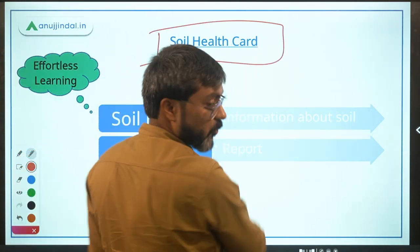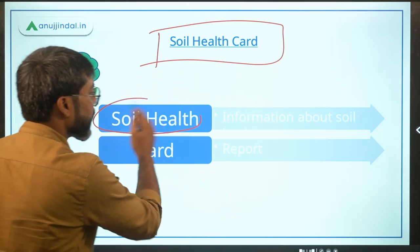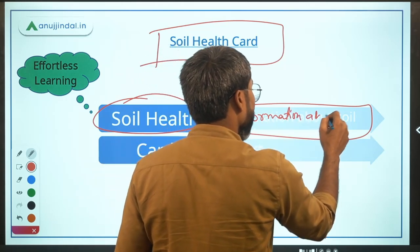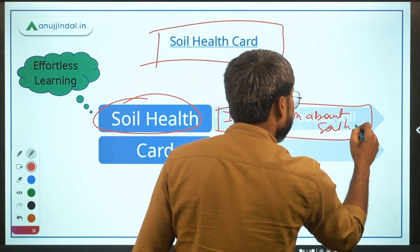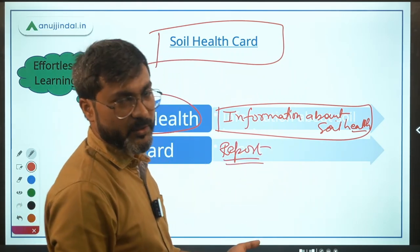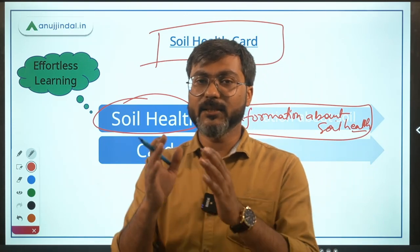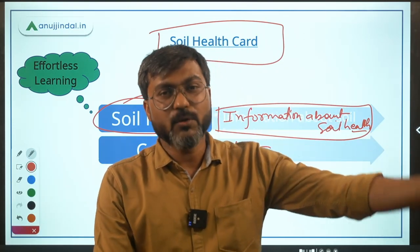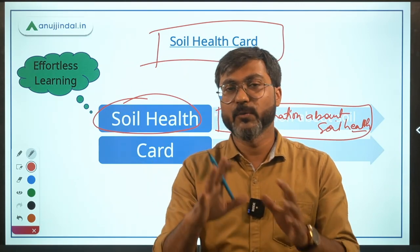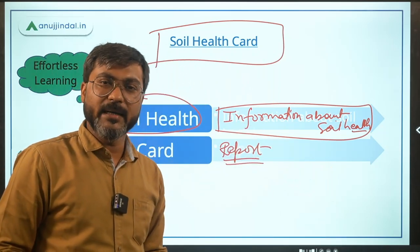Now let's talk about the Soil Health Card scheme — it is a very easy scheme with just a few key points. A soil health card is essentially a report providing information about the soil health of a particular area. Farmers use this information to plan their sowing, harvesting, and crop selection accordingly.